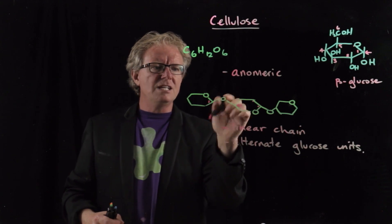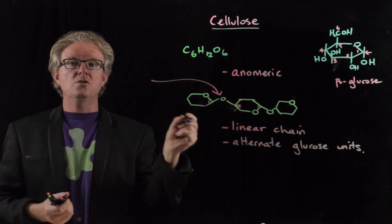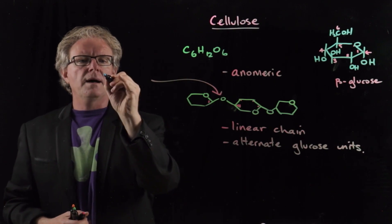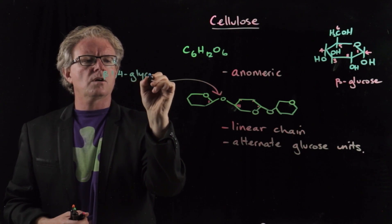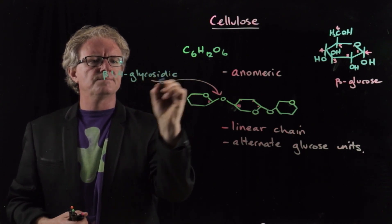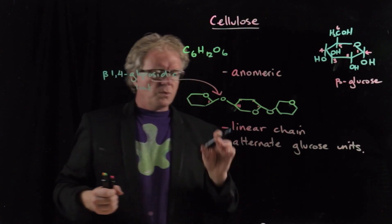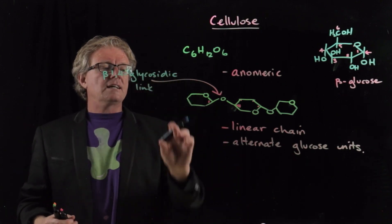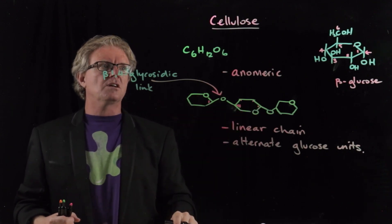And so what we have, this linkage here between the glucose units is called a beta-1,4-glycosidic link. So we have a beta-1,4-glycosidic link that creates cellulose being nice and linear in this particular form.